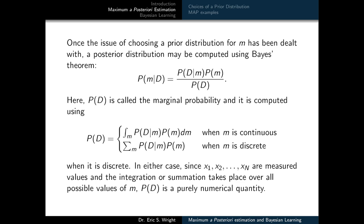Once the issue of choosing a prior distribution for M has been dealt with, a posterior distribution may be computed using Bayes' theorem. The posterior distribution is the probability of M given D, computed using the familiar Bayes formula: P of D given M times the prior P of M, divided by the marginal probability P of D. P of D is computed using the law of total probability — either its integral form when M is continuous or its summation form when M is discrete. Since the data points are all measured values and integration takes place over all possible values of M, P of D is a purely numerical quantity.